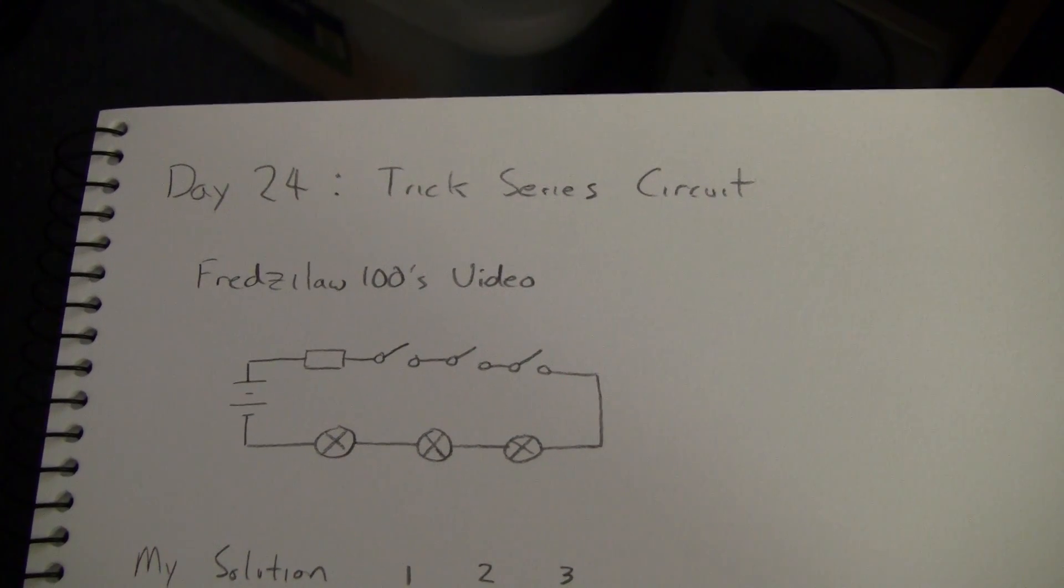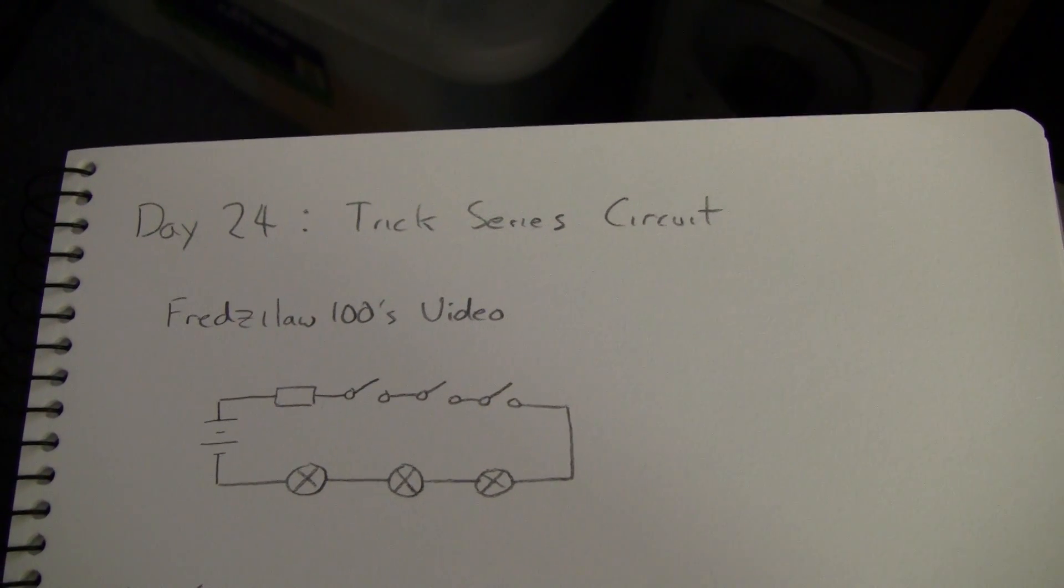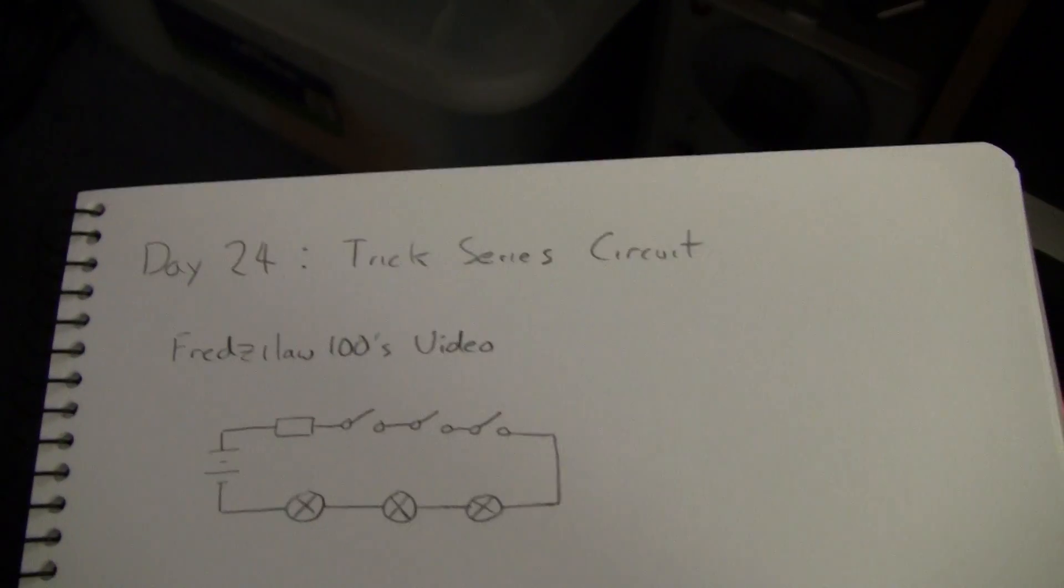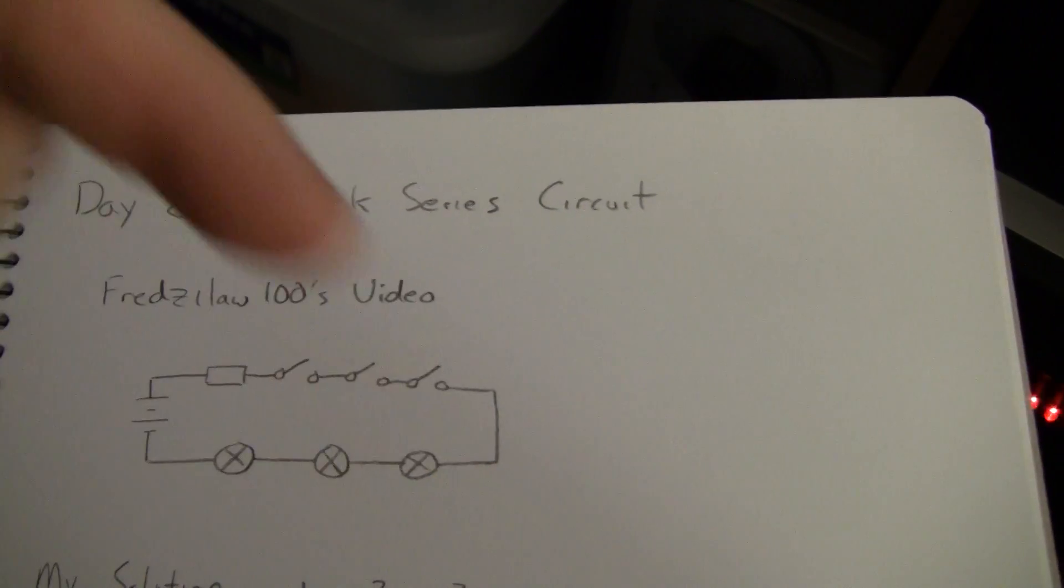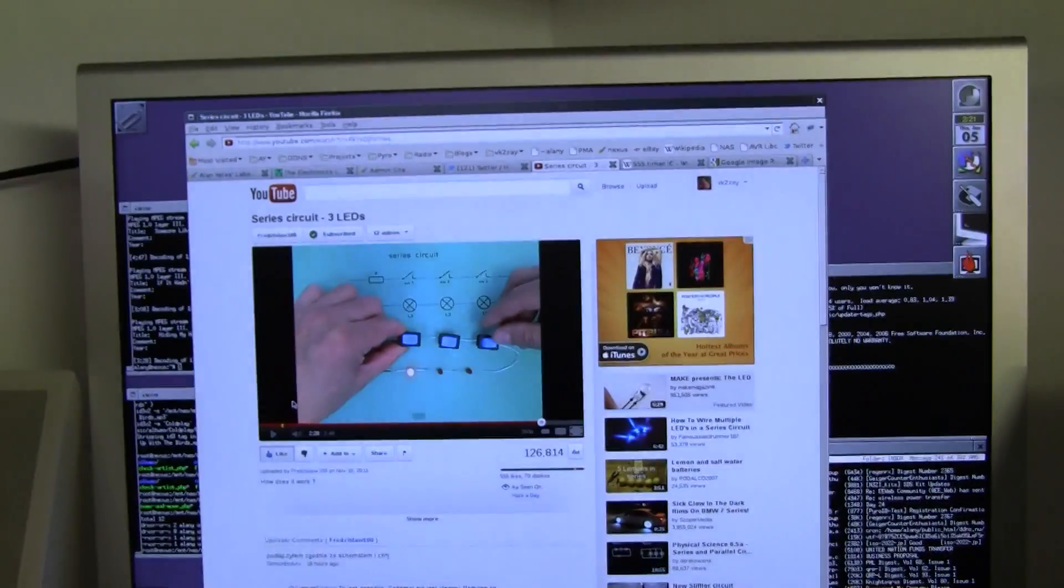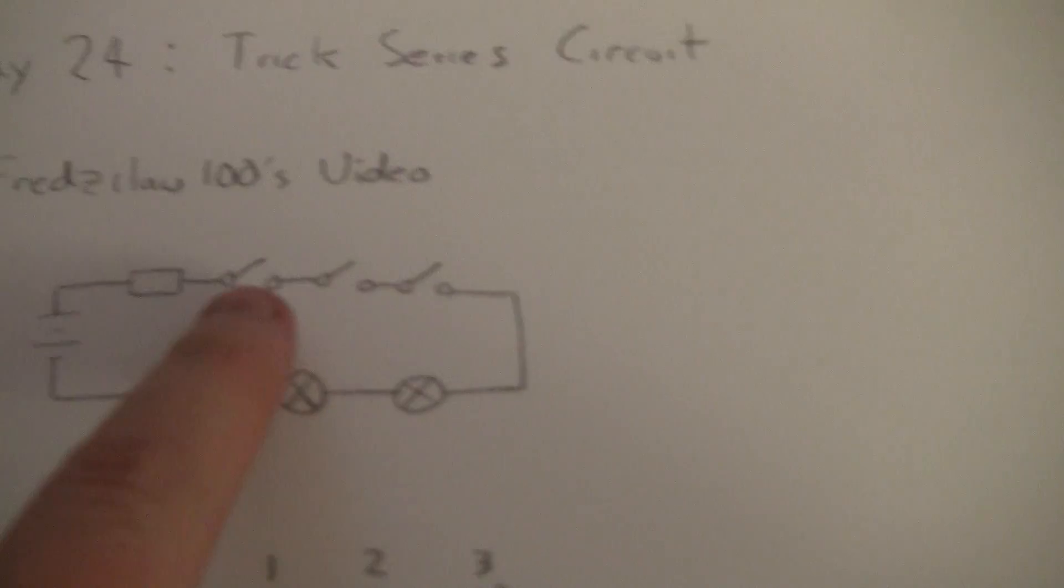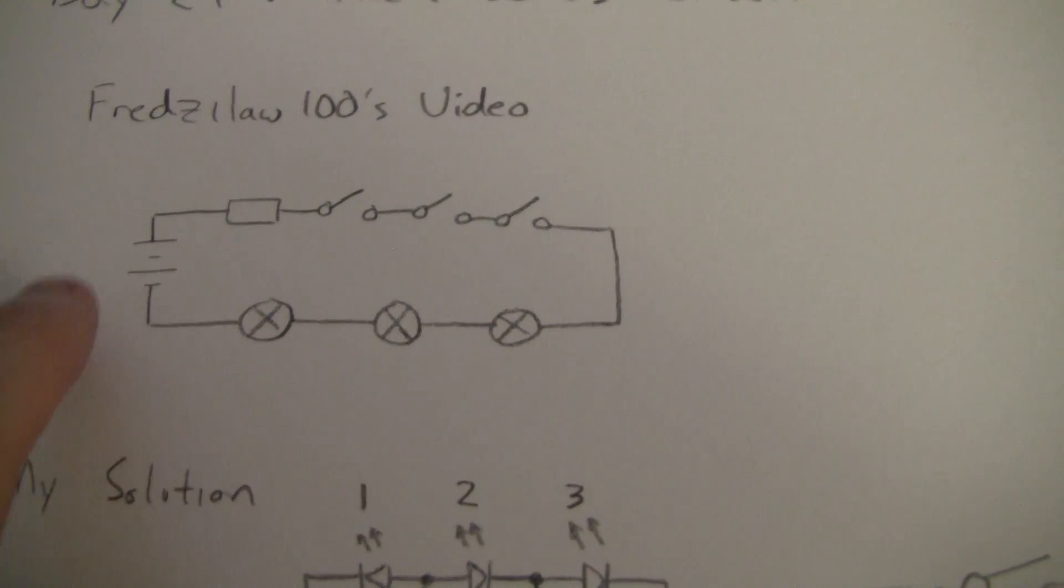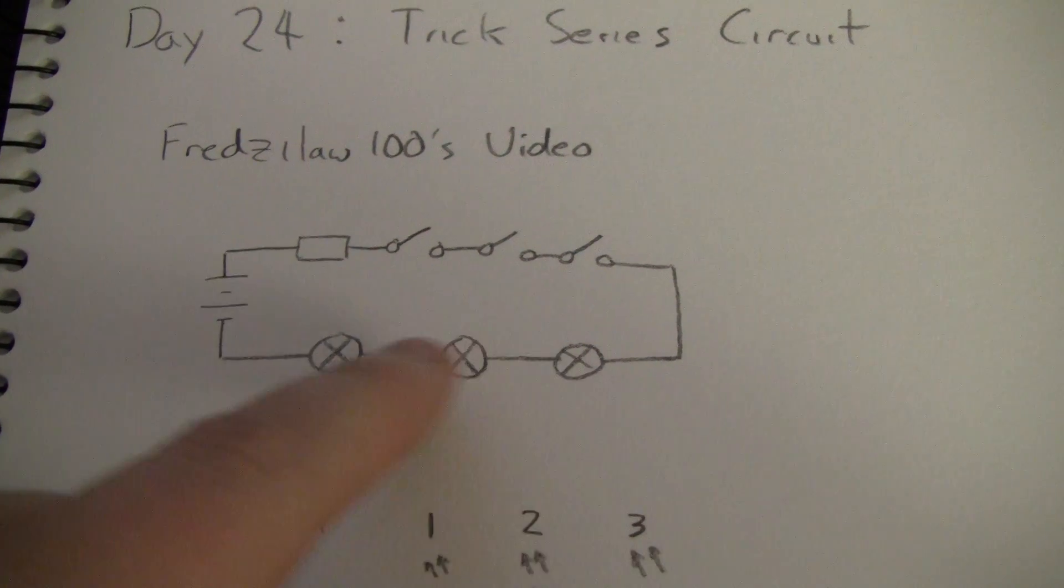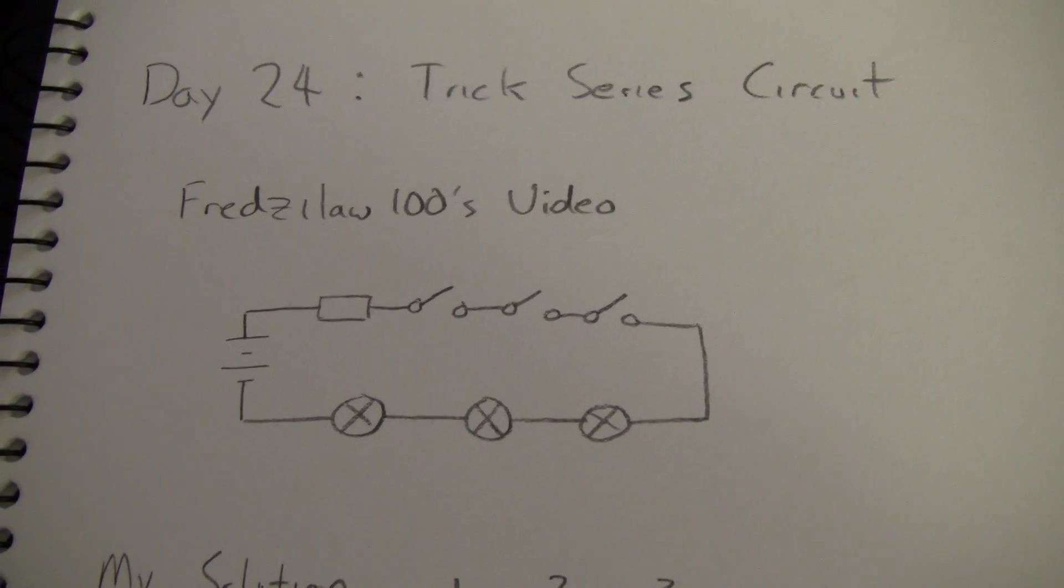This is actually a result of Fredzy Law 100's video that has been going around the traps and a lot of people have been discussing how it might be done. I'll link it in the bar below for you to go and have a look at. There's a screenshot of it there. He's got this fake series circuit where he's got three switches, three LEDs, a resistor and a battery, and he magically makes the switches independently control the LEDs. It looks quite cool,